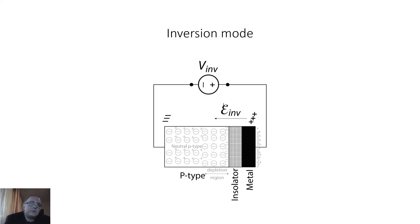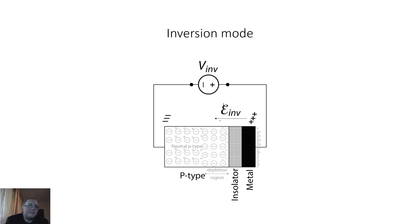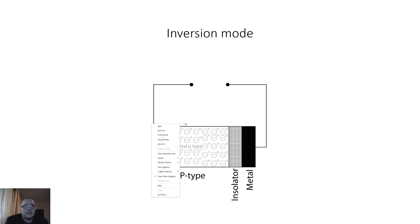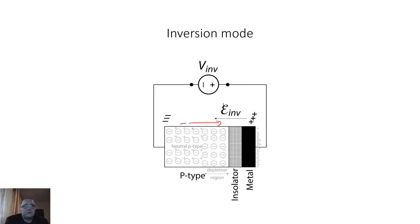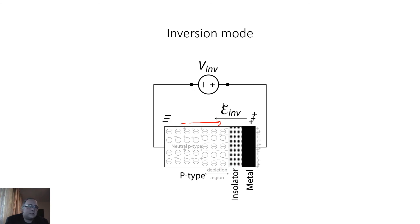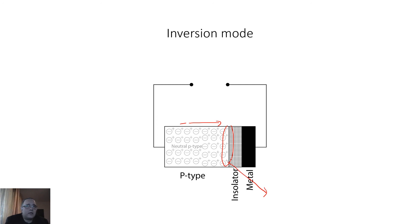Here is a short animation of the inversion mode. We go through the depletion mode, and then in the inversion mode the field magnitude is much stronger, such that the minority carrier electrons are attracted from deep in the semiconductor to the thin interface layer between the semiconductor and the insulator. The layer close to the oxide is now inverted from a p-type to an n-type semiconductor, for which the majority of mobile carriers are electrons.